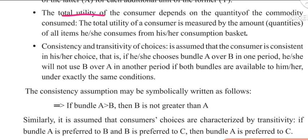Total utility is the summation of marginal utilities. The total utility of the consumer is measured by the amount or quantity of all items he or she consumes from his or her consumption basket.